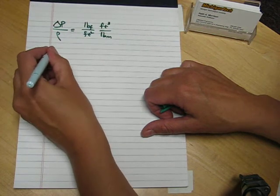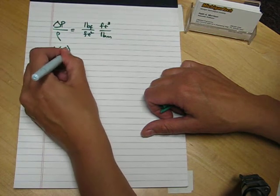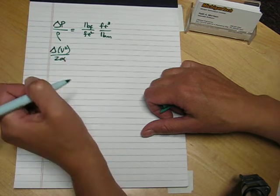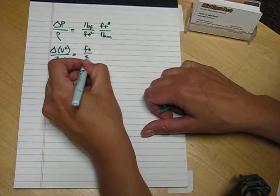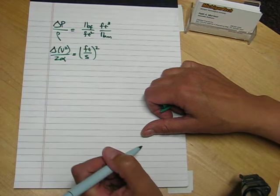The velocity term would be delta V squared over 2 alpha. Alpha is dimensionless. Velocity has units of feet per second. When we square it, we get feet squared per second squared.